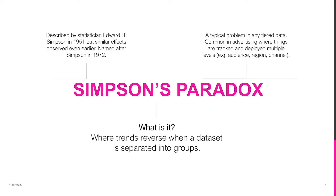So what is Simpson's paradox? It's where trends reverse when data is separated into separate groups. This means we observe the direction of the trend when we look at our data as a whole, and then when we slice it into individual groups, it will change direction. It was first described by statistician Edward Simpson in 1951 and finally named after him in 1972.